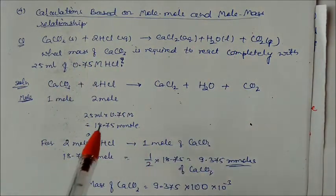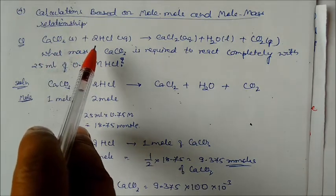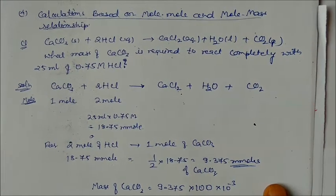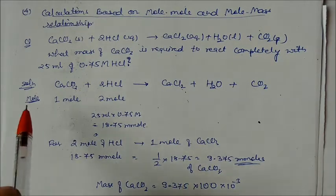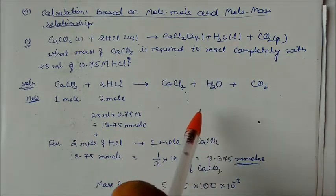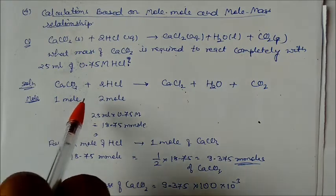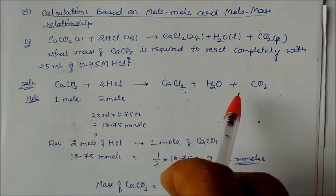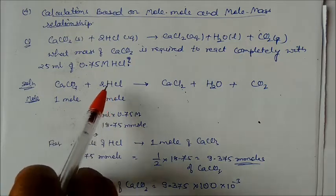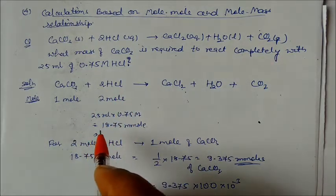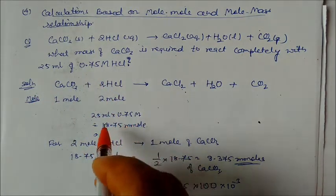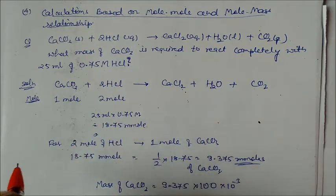Now we will see calculation based on mole-mole and mole-mass relationships through an example. CaCO₃ reacts with HCl to give CaCl₂, water, and CO₂. The question: what mass of CaCO₃ is required to react completely with 25 mL of 0.75 molar HCl? Write and balance the equation: CaCO₃ + 2HCl → CaCl₂ + H₂O + CO₂.